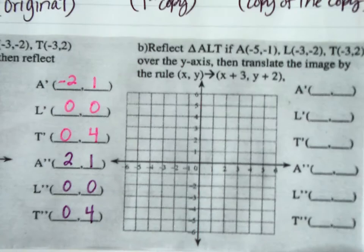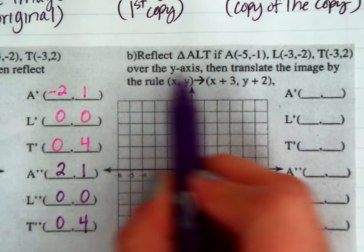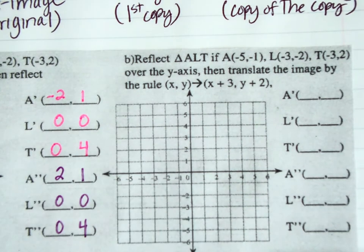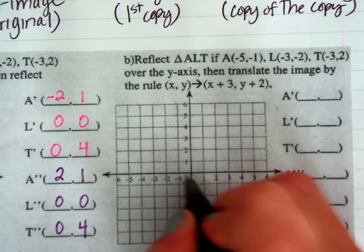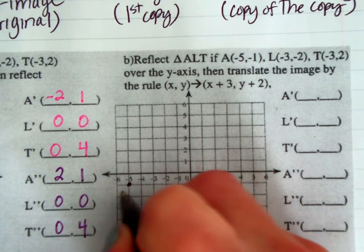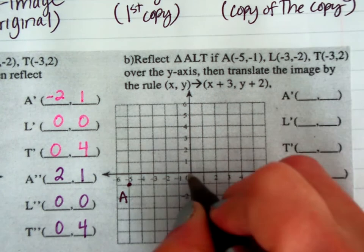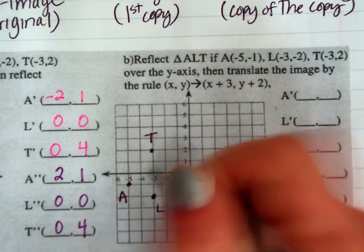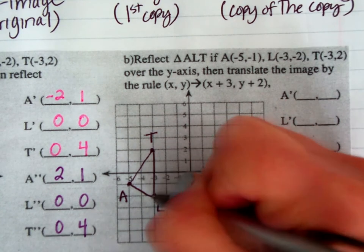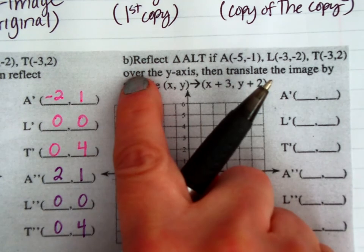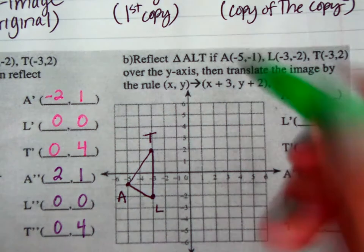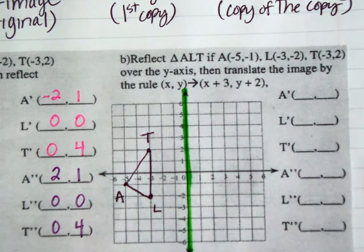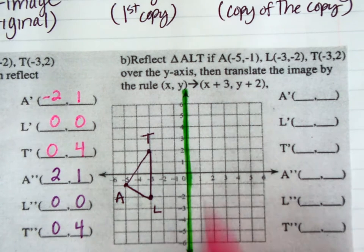I'm going to start with the same original triangle ALT but this time reflect over the Y-axis first, then translate it, and we'll see if we get the same coordinates for our prime and double prime. Graphing the original: A is (−5, −1), L is (−3, −2), and T is (−3, 2). I'm going to highlight the Y-axis as my line of reflection, and use pink for my first copy. For the reflection, I need to see how far each point is from the line of reflection.